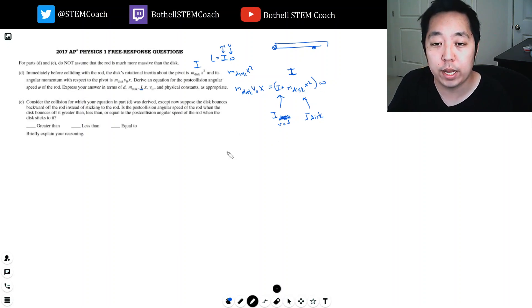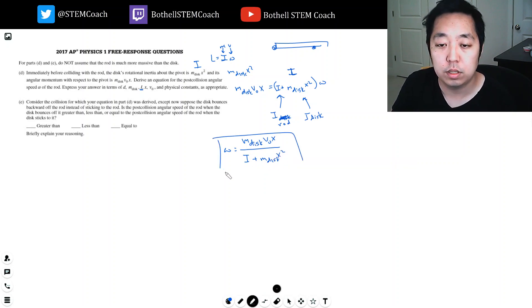So solving for omega, I get omega equals mdisc V0 x over I plus mdisc x squared.